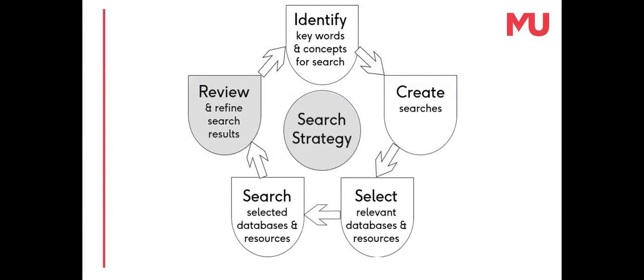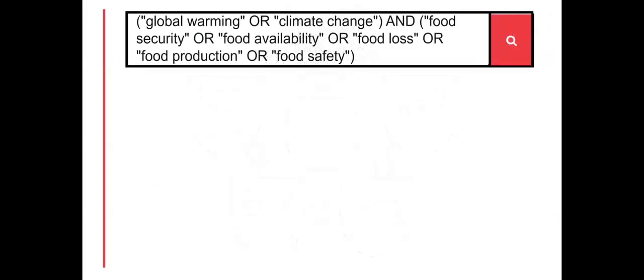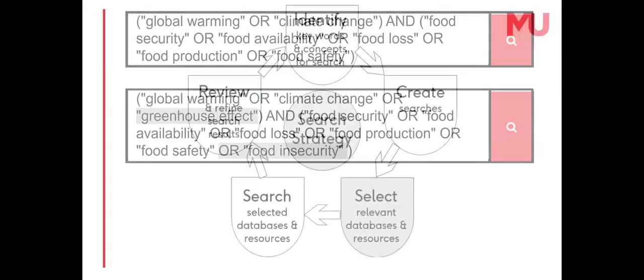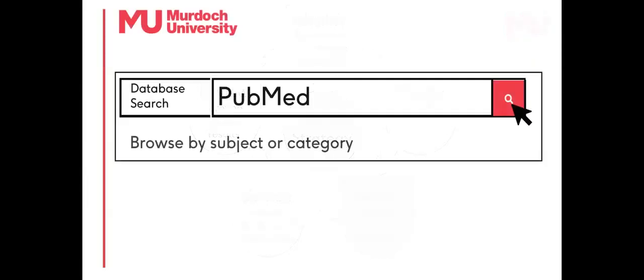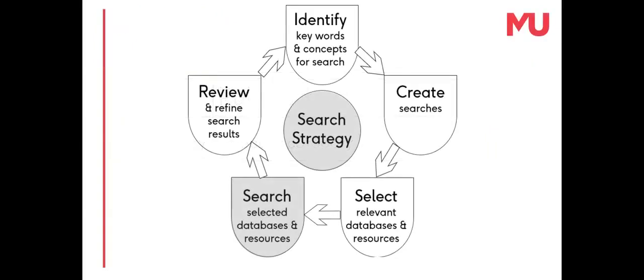For example, initial research can reveal additional search words or aspects of a topic to further explore. Using different databases may provide different search results, or search filters can be modified to limit or broaden search results.